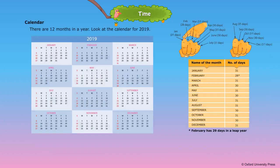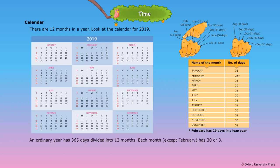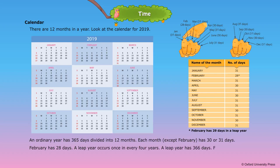Calendar. There are 12 months in a year. Look at the calendar for 2017. An ordinary year has 365 days divided into 12 months. Each month, except February, has 30 or 31 days. February has 28 days. A leap year occurs once in every 4 years and has 366 days. February has 29 days in a leap year.